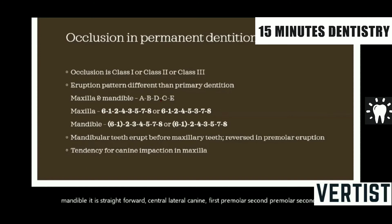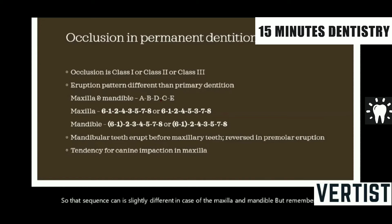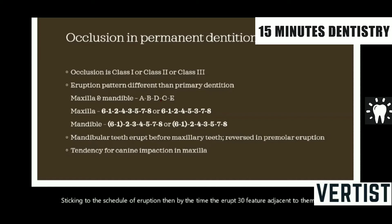That sequence can be slightly different in case of the maxilla and mandible. But remember that if the teeth are not sticking to the schedule of eruption, then by the time they erupt, the adjacent teeth will encroach their space. If they encroach their space, there won't be any space for them to erupt, which will result in what we call malocclusion.